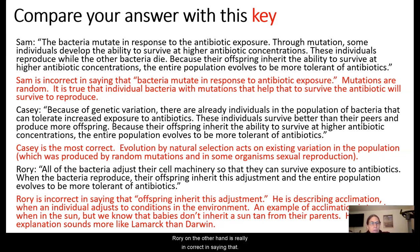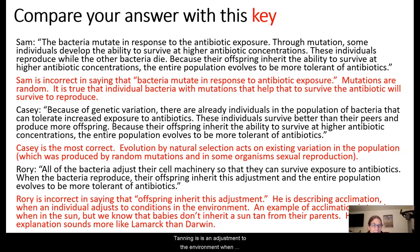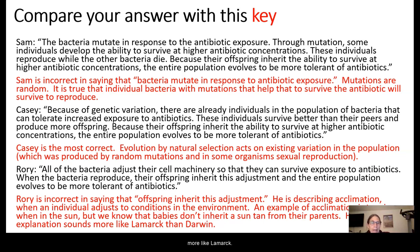Rory is incorrect in saying that offspring inherit an adjustment — as if bacterial cells could somehow determine that they need to adjust and pass that on. For example, tanning is an adjustment when we're exposed to a lot of sun, but babies don't inherit a suntan from their parents. So Rory sounds more like Lamarck than Darwin. Casey has the best explanation.